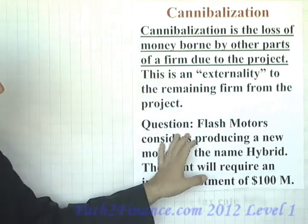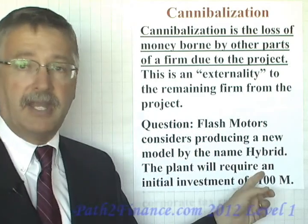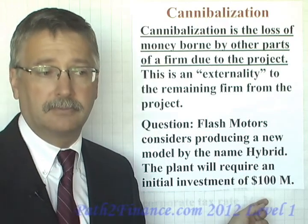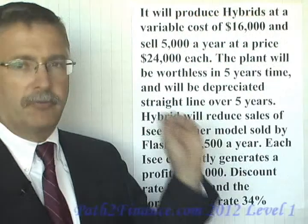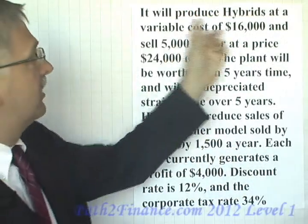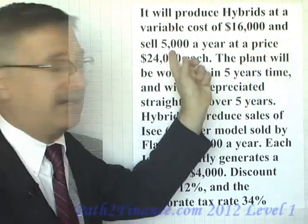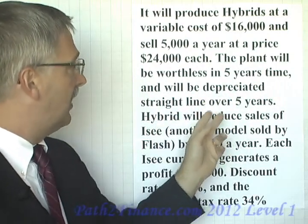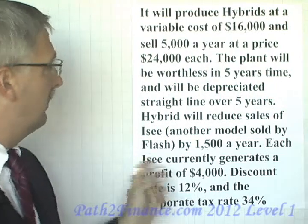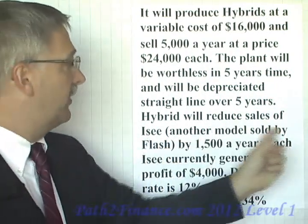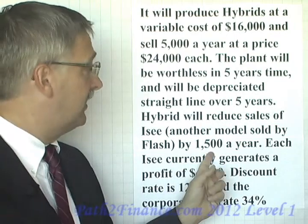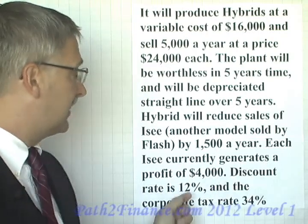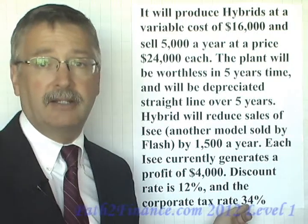Here's our example. Flash Motors considers producing a new model called the Hybrid. The plant will require an initial investment of $100 million. It's going to produce Hybrids at a variable cost of $16,000 and sell 5,000 a year at $24,000 each. The plant's going to be worthless in five years, depreciated straight line over five years. The Hybrid will reduce sales of the IC — another model sold by Flash — by 1,500 a year. Each IC currently generates a profit of $4,000. The discount rate is 12% and our corporate tax rate is 34%.